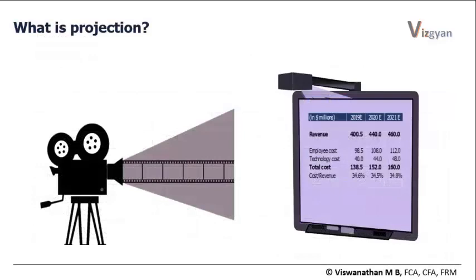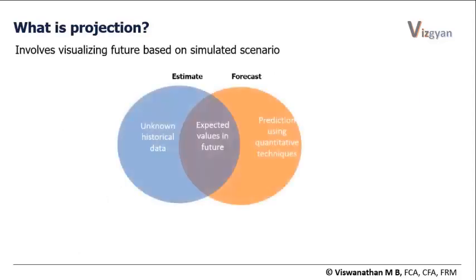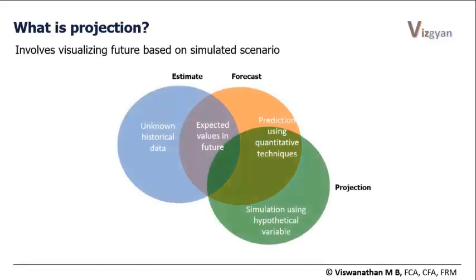We have discussed estimations and forecasts. Now let us talk about the third one: projection. Projection essentially involves visualizing the future under one or more simulated scenarios. The scenario we simulate can be based on our estimate or quantitative forecast, or it can be completely hypothetical. For instance, a company may want to find out what would happen to its profit if sales fall by 50%. Keep in mind — it is not that the company is expecting sales to fall by 50%, but it just wants to understand what could happen if such an eventuality occurs. This is projection.